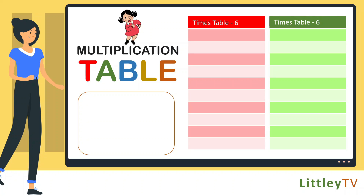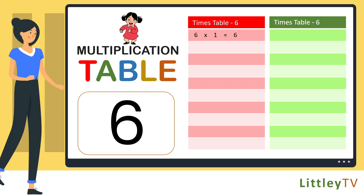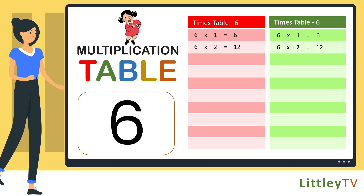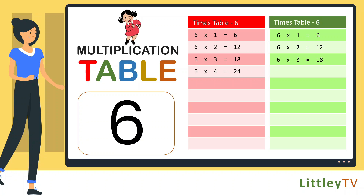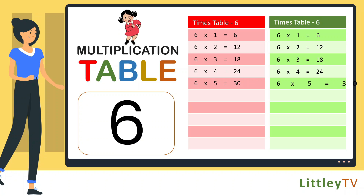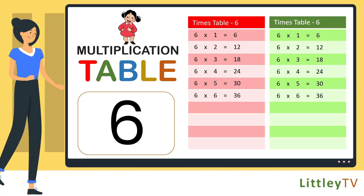Table of 6. 6 ones are 6, 6 twos are 12, 6 threes are 18, 6 fours are 24, 6 fives are 30, 6 sixes are 36.